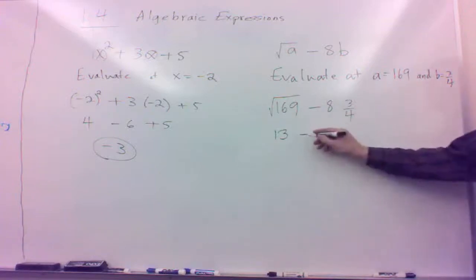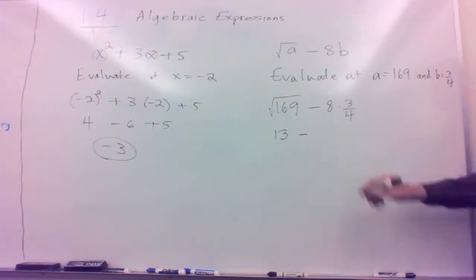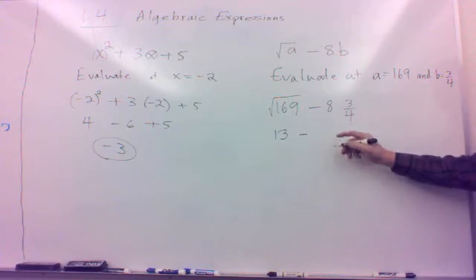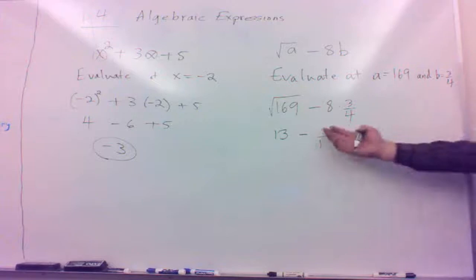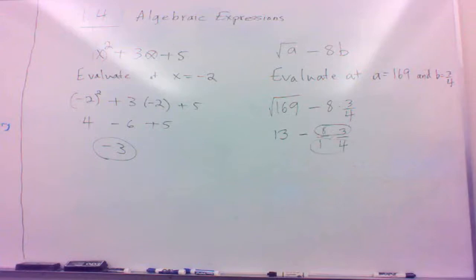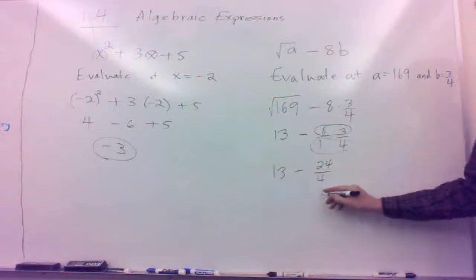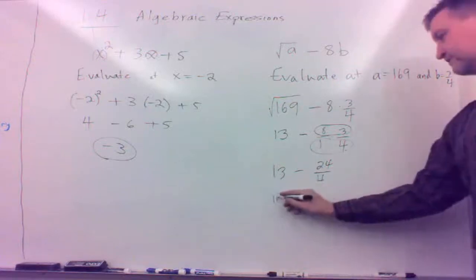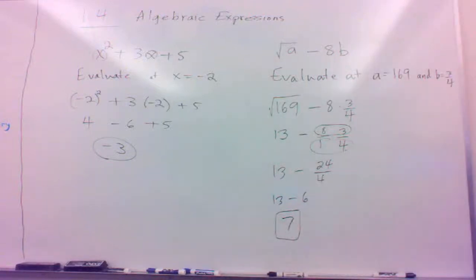Now, when we multiply fractions, we need to multiply the numerators together and multiply the denominators together. We can think of that 8 as being 8 over 1. So multiplying: 8 times 3 is 24, and 1 times 4 is 4, so it's 24 divided by 4, which is 6. Therefore, 13 minus 6 equals 7 — that's the value of that expression.